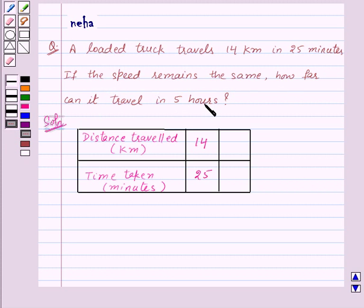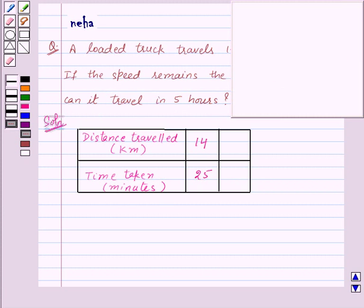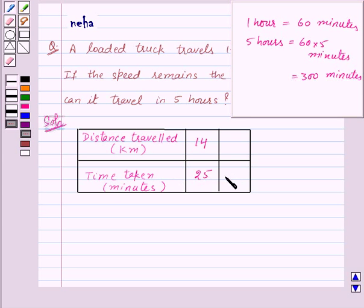Now if the speed remains the same, how far can it travel in 5 hours? We need to convert 5 hours into minutes. We know that in 1 hour there are 60 minutes, so in 5 hours there are 60 into 5 minutes, which equals 300 minutes. So the time taken is 300 minutes.